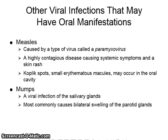Other viral conditions that may have oral manifestations: Measles are caused by a paramyxovirus. It is a highly contagious disease causing systemic symptoms and a skin rash. Koplik spots, which are small erythematous macules, may occur in the oral cavity. Mumps are a viral infection of the salivary glands, most commonly causing bilateral swelling of the parotid glands.